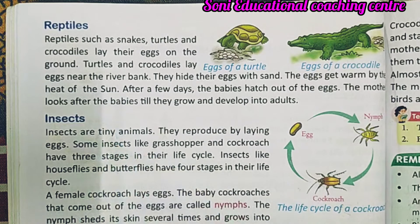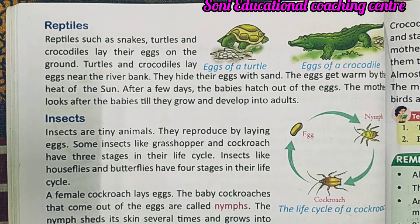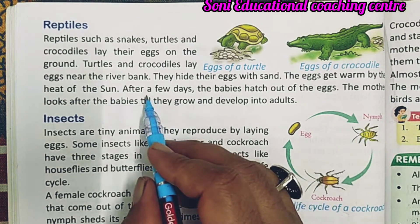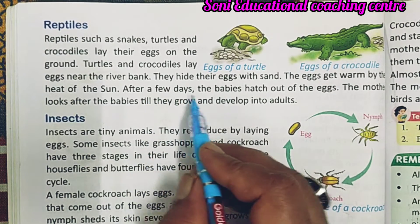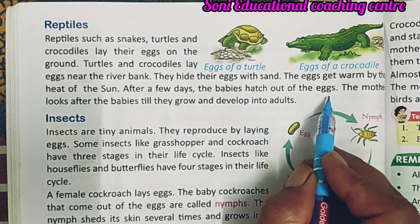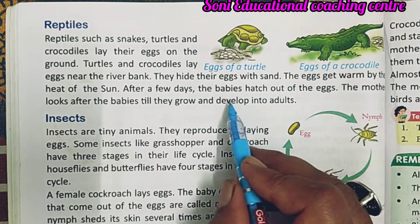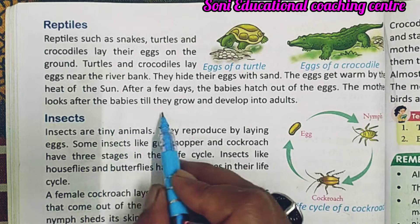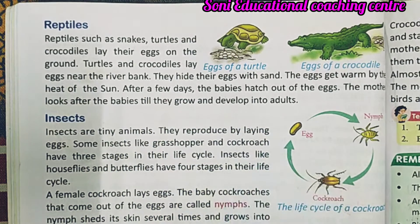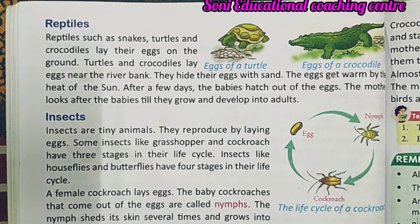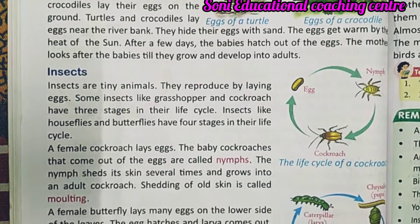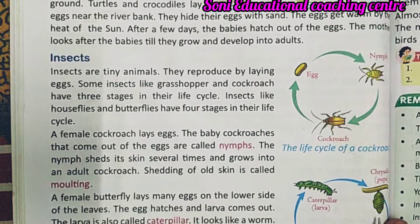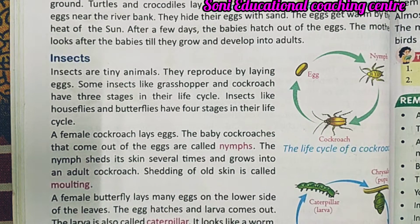The eggs get warm from the heat of the sun — जब सूरज की किरणें मिट्टी के ऊपर गिरती हैं, उससे अंडों को heat मिलती है। After a few days, the babies hatch out of the eggs. The mother looks after the babies till they grow and develop into adults — माता तब तक उनकी देखभाल करती है जब तक कि वो बड़े होकर adult नहीं बन जाते।